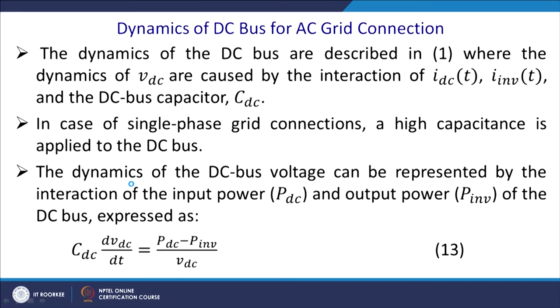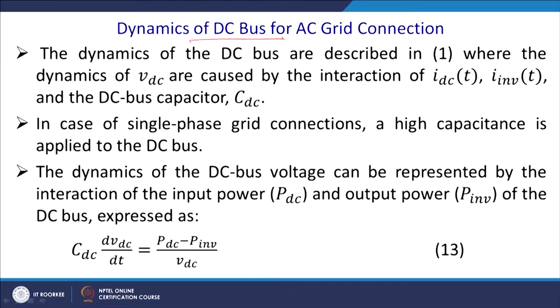Let us now take up the next case: the dynamics of the DC bus for the AC grid connection. When connecting to the main grid and converting DC to AC, the dynamics of the DC bus are described by equation 1, where VDC is caused by the interaction between IDC — the current generated from the PVSC — and the current drawn by the grid-side converter and DC bus capacitor C_DC. In the case of single-phase grid connections, a high capacitance is applied to the DC bus to reduce disturbances.